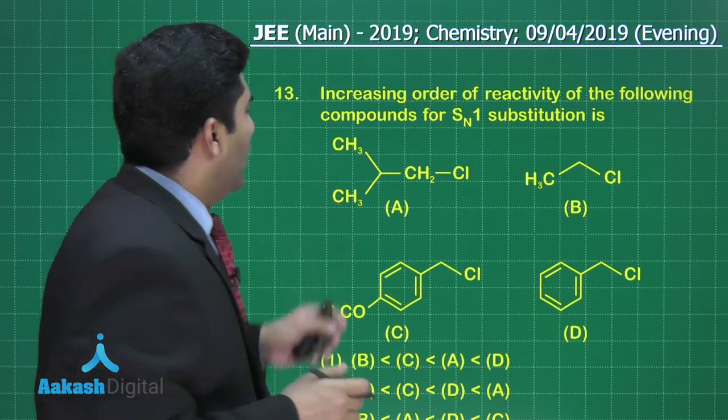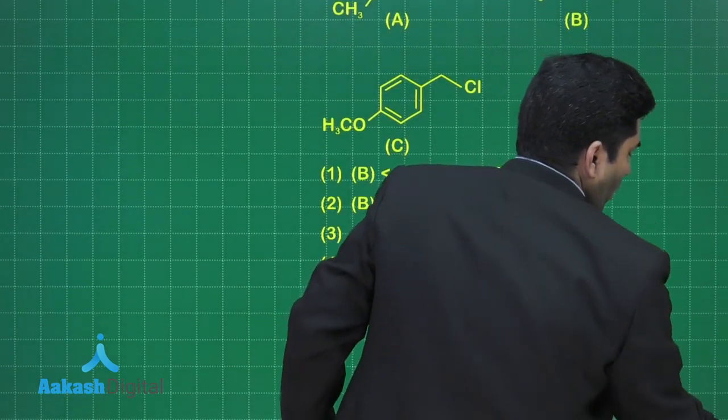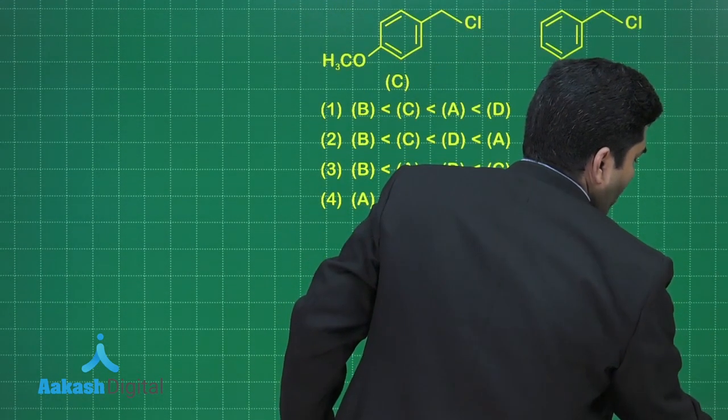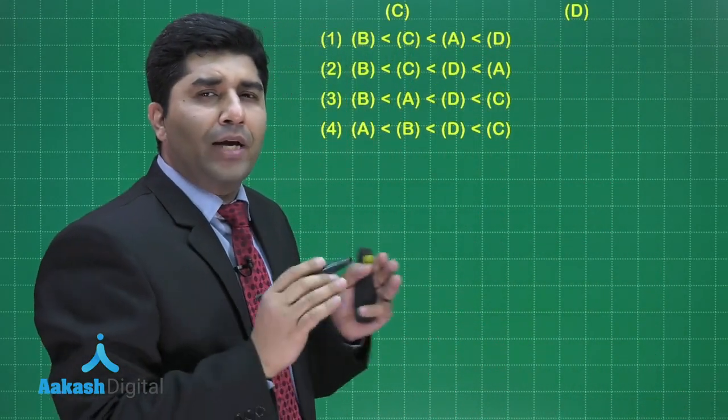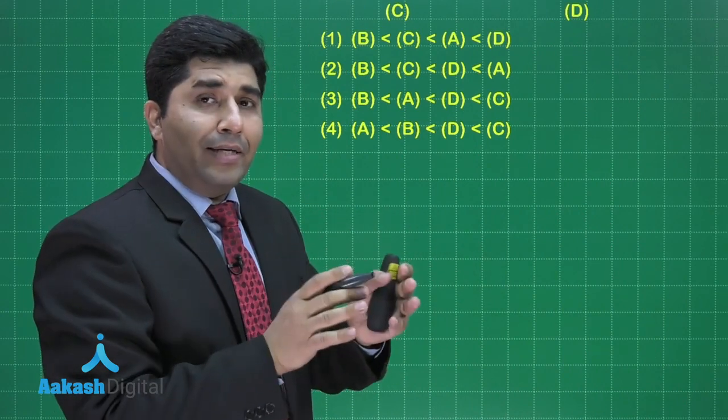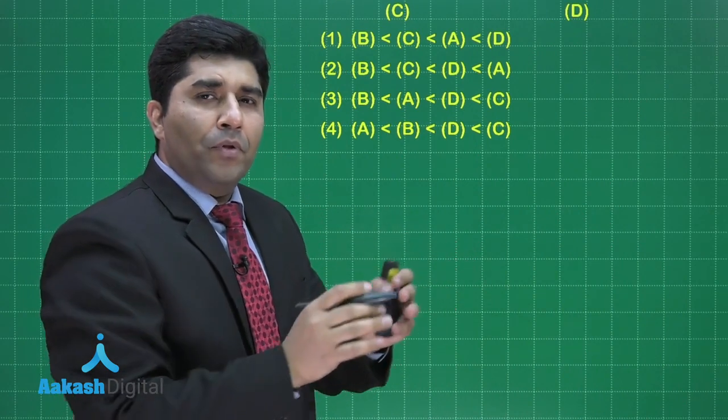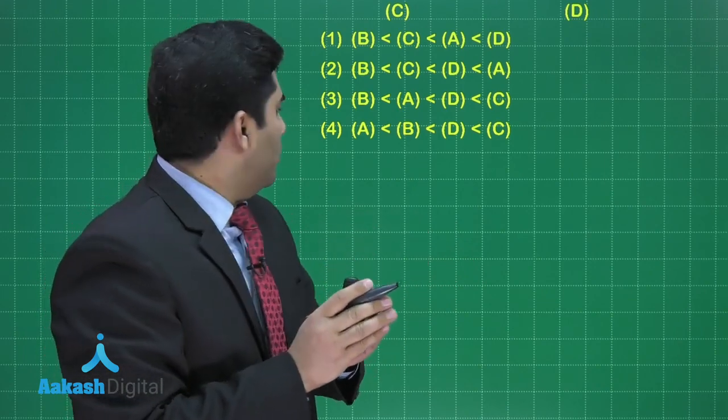So what we can do, we can remove chlorine and place the positive charge to form the carbocation and then we can compare the stability of the carbocation. The more stable the carbocation, more it will go towards the SN1 reaction.